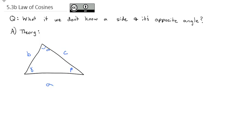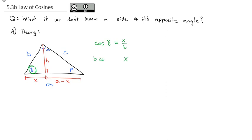Very similar to last time, we're going to drop a height down from this triangle. This time we break side A into two pieces: the left side, which we'll call X, and the right side, which is A minus X. Now focusing on angle gamma and the cosine of that angle — cosine looks at the smaller right triangle on the left, giving us X over B. Multiplying both sides by B, we find X equals B times the cosine of gamma.